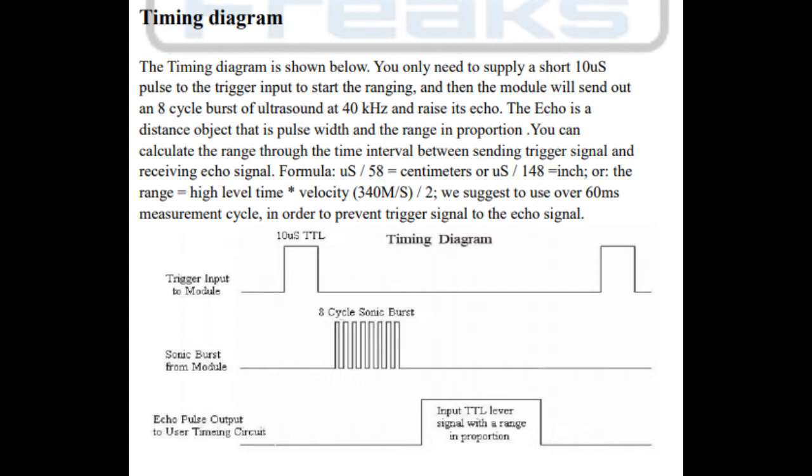The echo is a distance object that is pulse width and the range in proportion. You can calculate the range through the time interval between sending trigger signal and receiving echo signal.